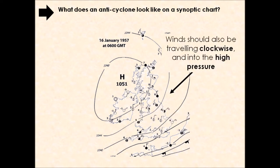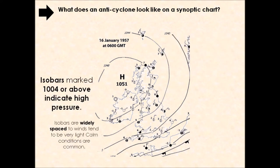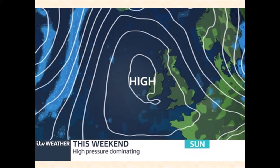Within an anticyclone, the winds should be travelling in a clockwise direction into that high pressure centre. We have what we call isobars surrounding that area of high pressure, which are marked by 1004 or above in terms of the number value of that air pressure. These isobars are showing us the pressure of the air that's falling and descending towards the ground surface. If the isobars are widely spaced, the winds tend to be very light. Calm conditions are typically very common.